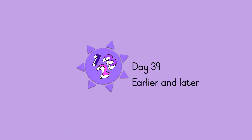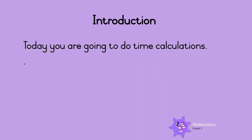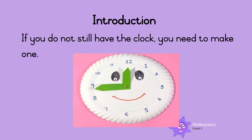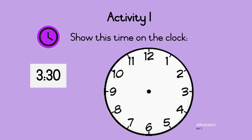Hello maths champions! Today you are going to do time calculations. You will need the analog clock that you made on day 31. If you do not still have the clock, you will need to make a new one. Use a paper plate and cut a long hand and a short hand from cardboard. Secure the hands with a split pin or a paper clip and an elastic band.